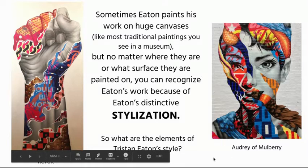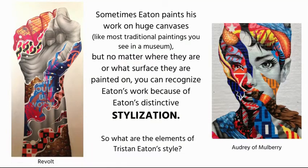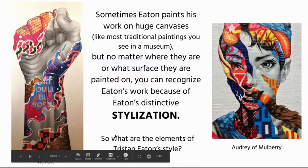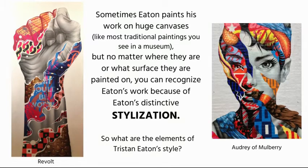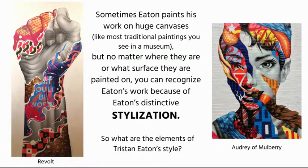No matter what surface Eaton's work is on, whether it's on the side of a building like this Audrey of Mulberry Street, which is of Audrey Hepburn and is also a mural in Little Italy, or whether it's like the image on the left which is on canvas, you can right away recognize that these two pieces are by the same guy. That's his distinctive stylization. Stylization has the word style right in it, and it means when you can recognize that a work of art is from the same period, part of the world, or in this case, the work of a particular artist.